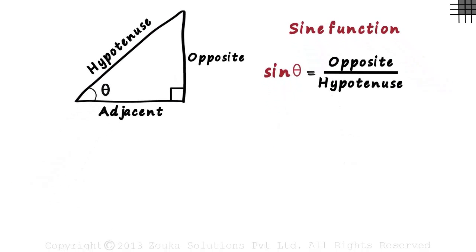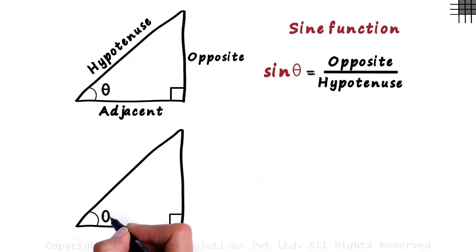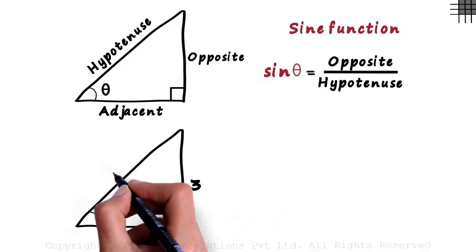Let's see an actual example. We have this right triangle. Let this angle be theta. And let the length of the sides be 3, 4 and 5 units.